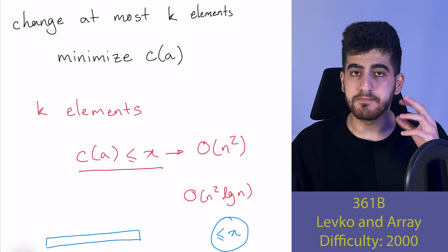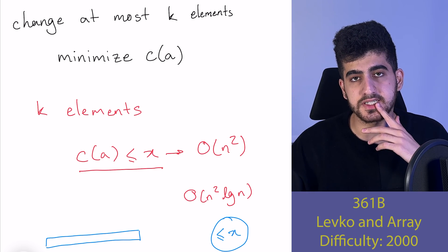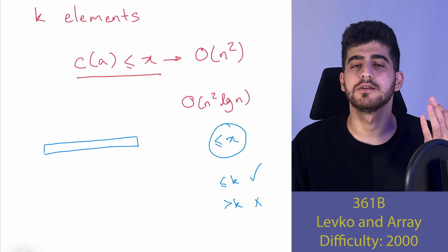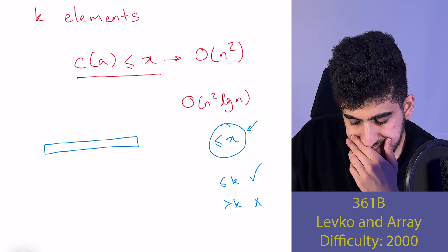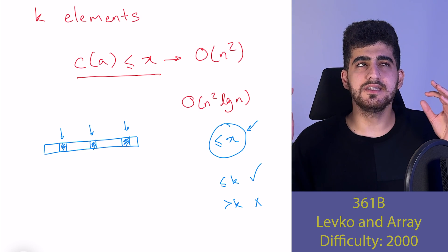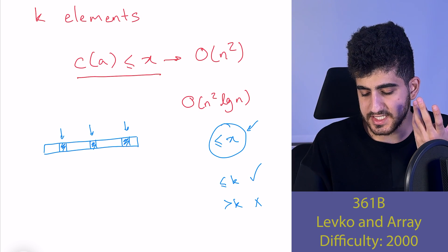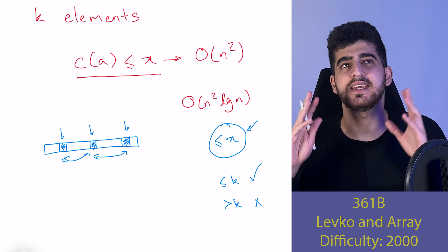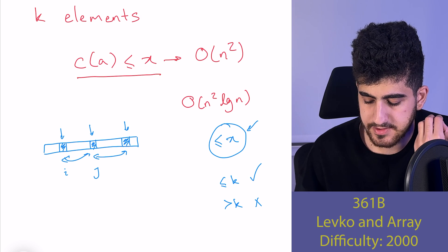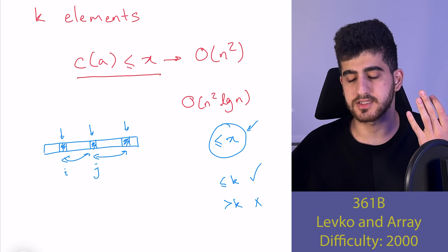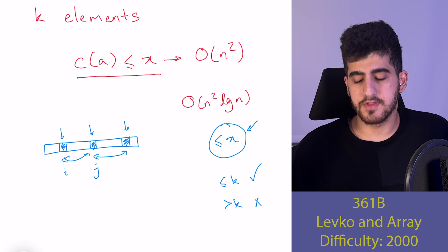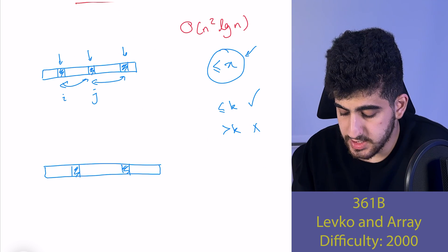We want to minimize the number of elements we change, which means we want to maximize the number of elements we do not change (shown in blue). We need to find the relationship between each two consecutive unchanged elements. The condition for elements at positions i and j to both stay the same while maintaining C(a) ≤ X: when I start from i and go towards j, each time my value can increase or decrease by at most X.